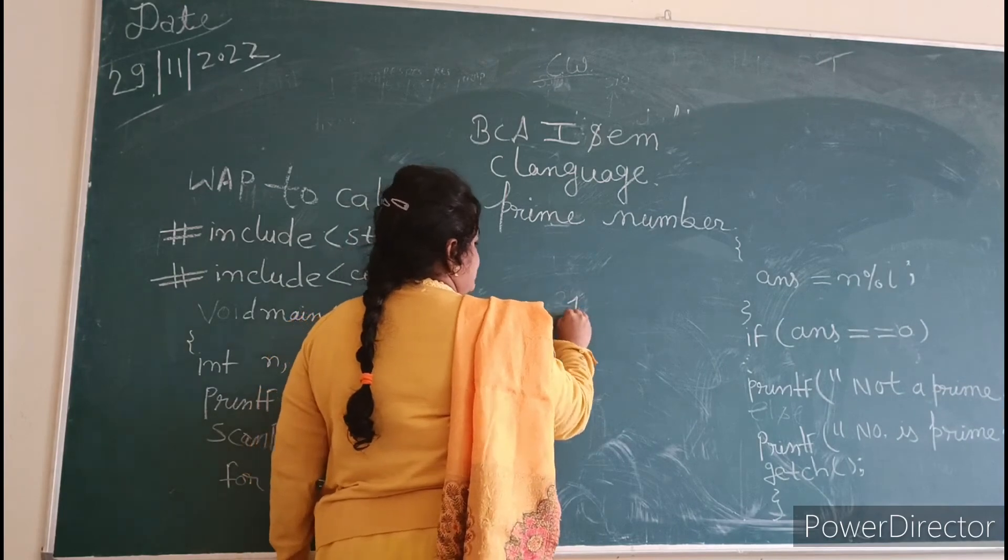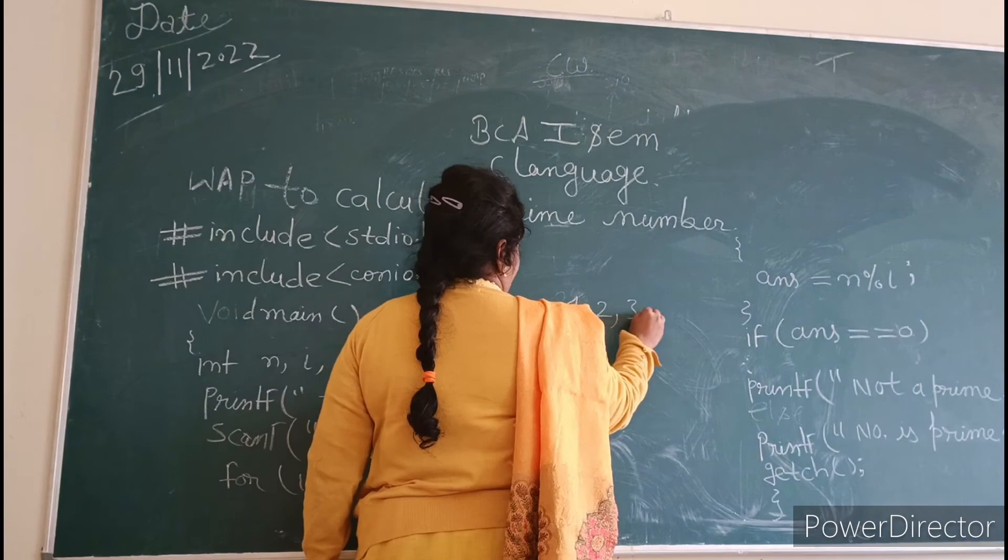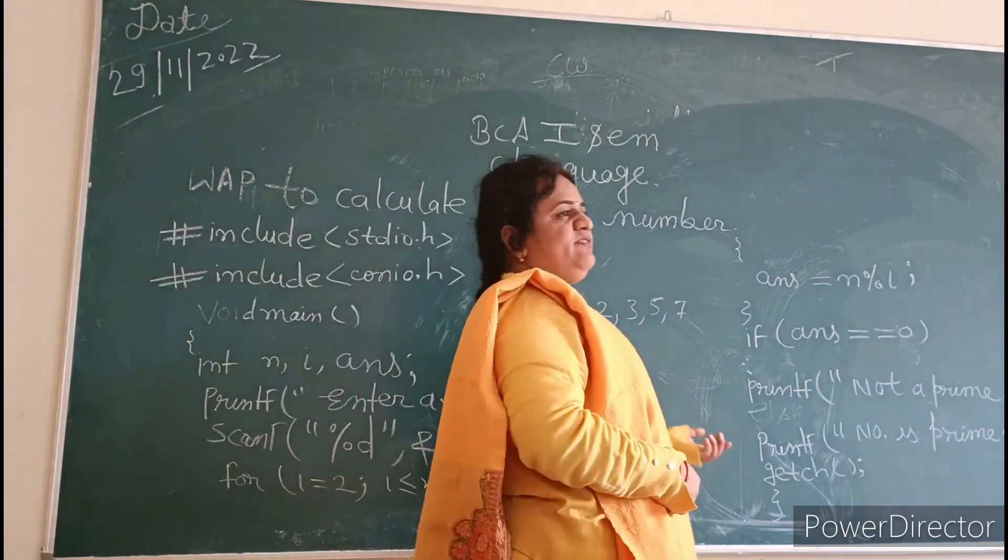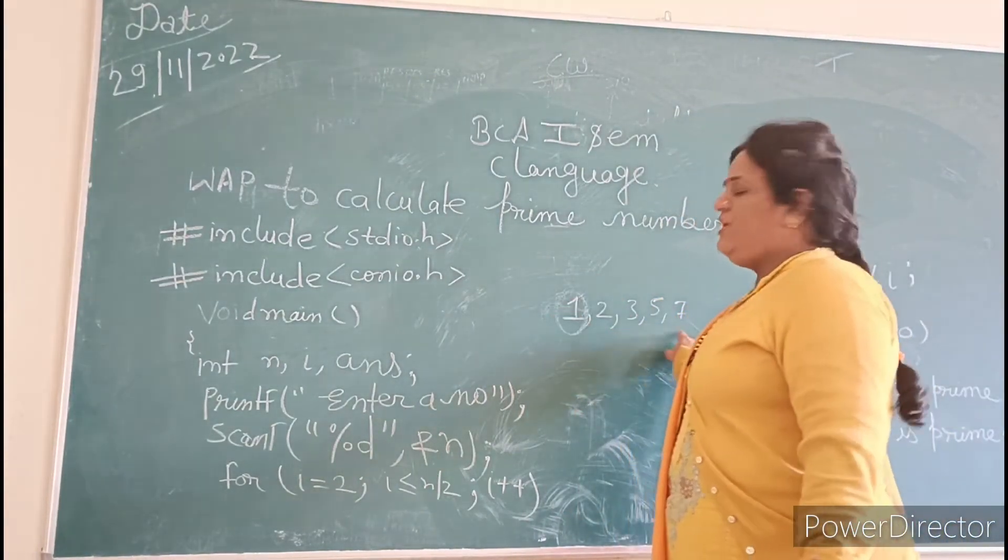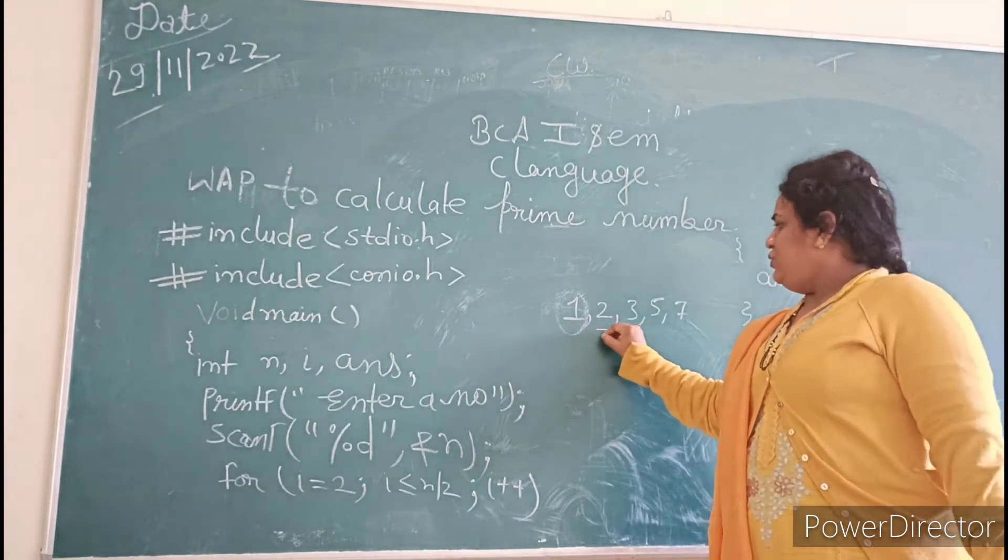Two, three, five, seven. If we get our number, we can divide this number either from one or from 2 to n.